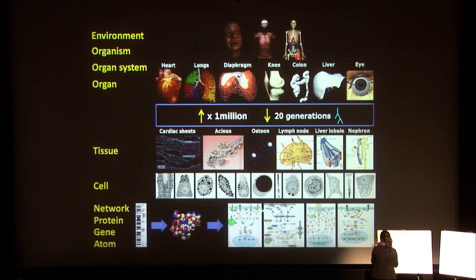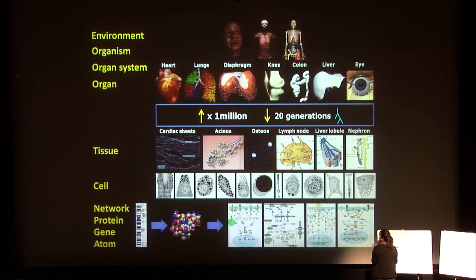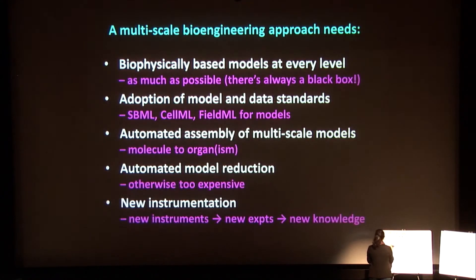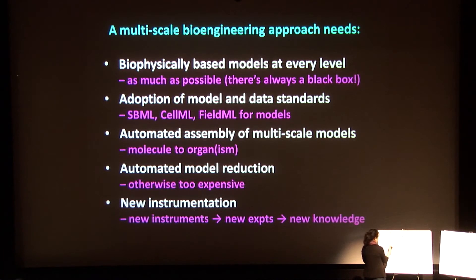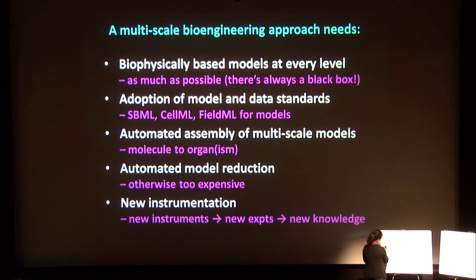The framework deals with structure and function across these scales, typically using lump parameter models at the lower levels, and it would fit well with attempts to build much more structure into cell-level function. The approaches taken are that models at every level should be biophysically based, always acknowledging that there's a black box somewhere. This framework needs to be built on model and data standards — there's no other way to get robust, reproducible frameworks for multiscale modelling. Those frameworks incorporate SBML, CellML, and FieldML.